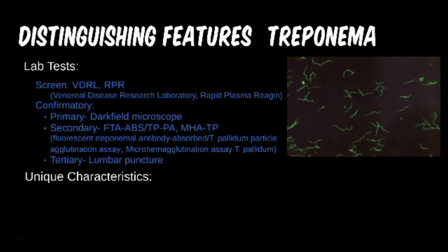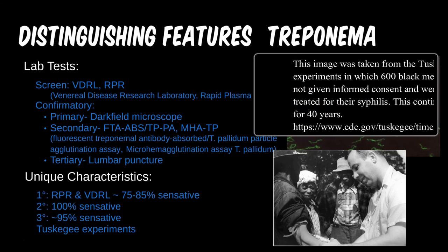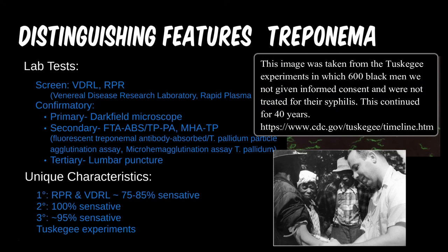RPR and VDRL are only about 80% sensitive for primary syphilis, meaning that they can be false negatives nearly 1 out of 5 times. Even if positive, the rate of false positives is quite high, leading to a second tier of confirmatory testing.